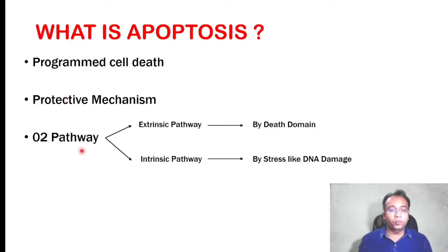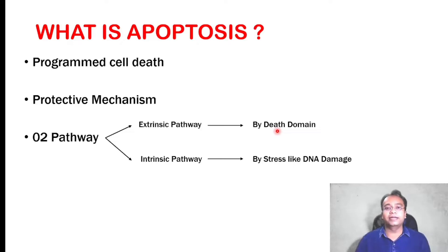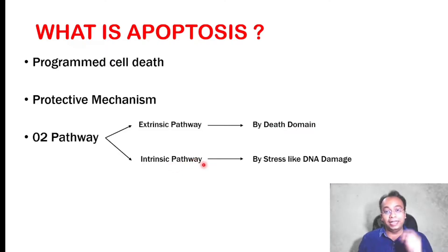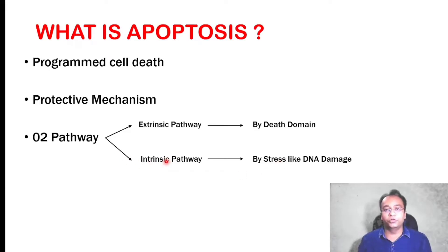Basically there are two pathways of apoptosis. The first is the extrinsic pathway, which is activated by a death domain — the death domain means CD95 — activated by receptors present on the TNF family. The second pathway is the intrinsic pathway of apoptosis, which is activated by cellular stress such as DNA damage, metabolic disturbance, chemotherapy, and radiotherapy. This intrinsic pathway occurs in the mitochondria. Those are the two pathways of apoptosis.